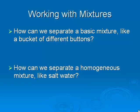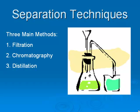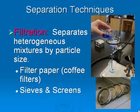How do we separate a mixture? If we have a bucket of buttons, that would be easy — we could just use our fingers to pick up the buttons and put them in different piles. But what about a mixture like salt water? We can't pick out the salt with our fingers. There are basically three different ways of separating mixtures: filtration, chromatography, and distillation. Filtration is for separating heterogeneous mixtures by particle size. For example, filter paper — like when making coffee, the filter paper catches the coffee grounds. Or we could use sieves or screens to separate gravel into different particle sizes.